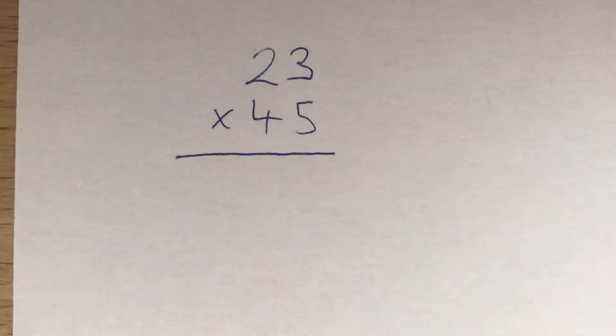In this video, we're going to take a look at using the column method for multiplication and look at a couple of different examples. The first example is 23 times 45.